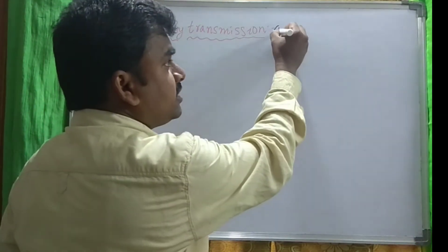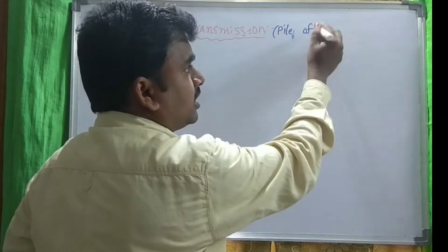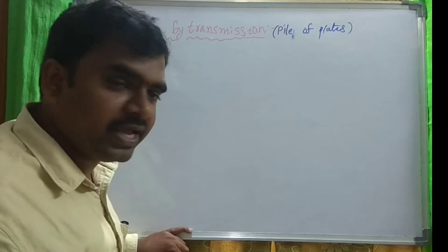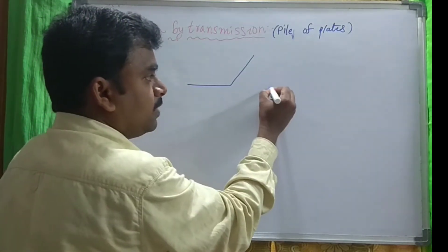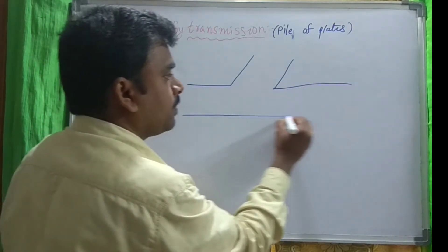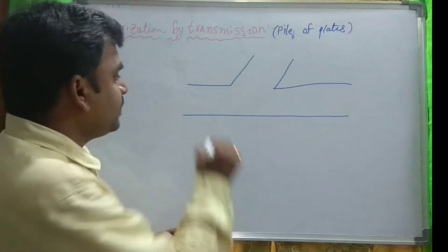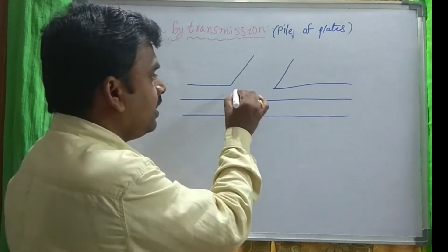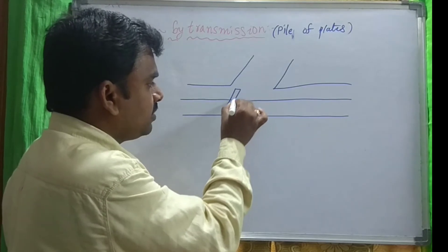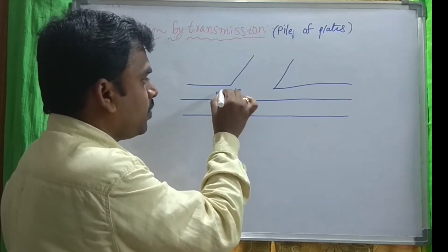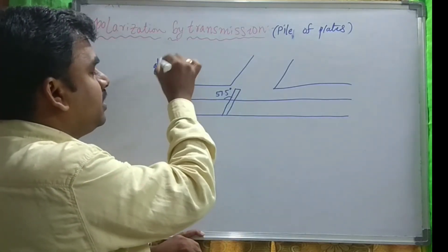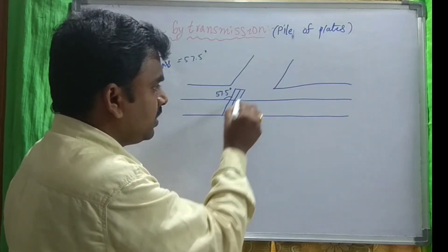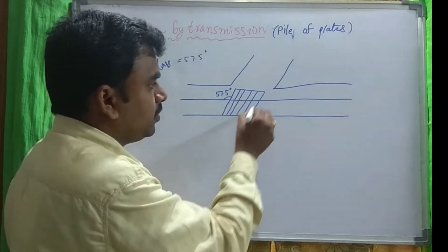Just to understand that, this arrangement is also called a pile of plates. Pile means an arrangement of plates. With how much angle do we have to arrange them? With the Brewster's angle. So this is the tube I have taken. In this tube, I am taking a number of plates inclined at an angle of 57.5 degrees — because for glass, the angle of polarization is 57.5 degrees. Like that, I have arranged a number of 15 to 20 plates.